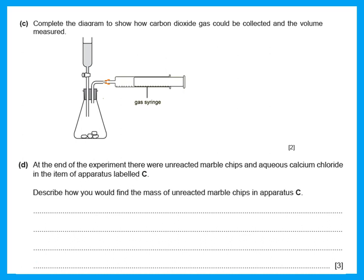At the end of the experiment, there were unreacted marble chips and aqueous calcium chloride in apparatus C. The marble chips were in excess, so at the end you will have unreacted marble chips as a solid at the bottom of the flask, and the product calcium chloride as a solution.